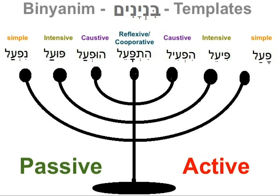The seven Binyanim each have four tenses: past, present, future, and imperative — and, of course, all of the pronouns. So one Shoresh can be used to describe a lot of the characteristics of the action. Sometimes a single Shoresh can be conjugated into 36 different verbs in one Binyan — in one template.